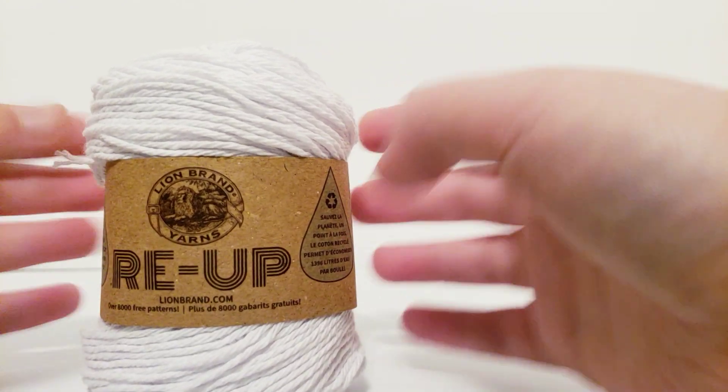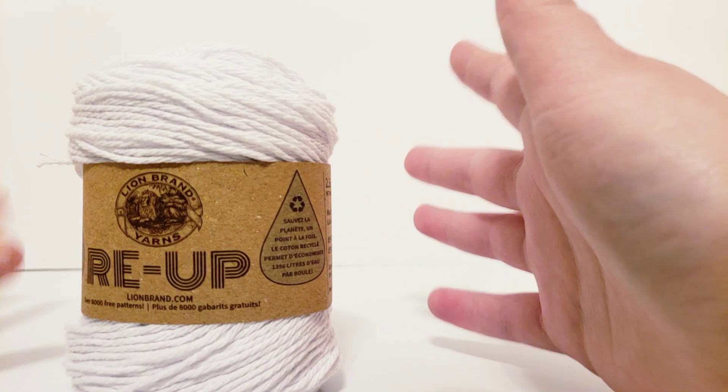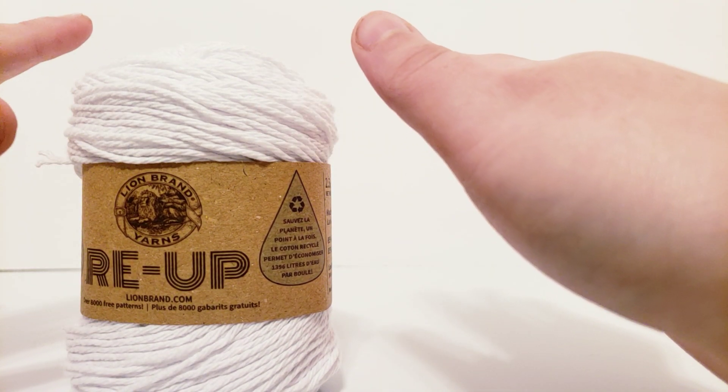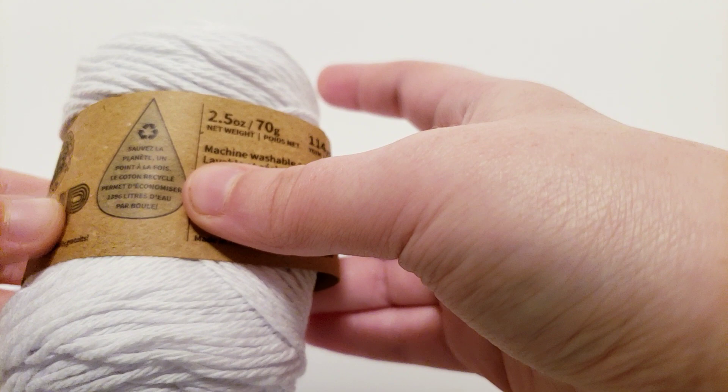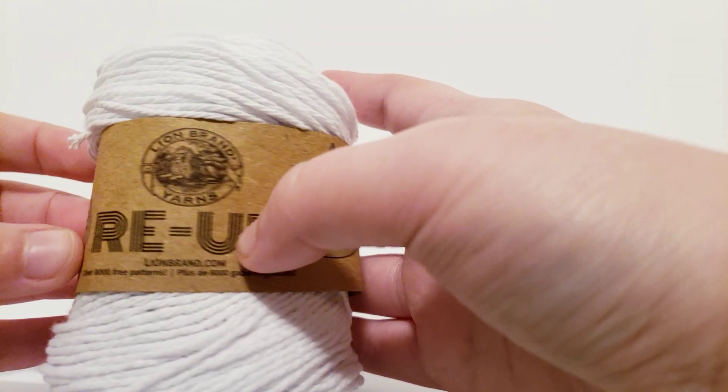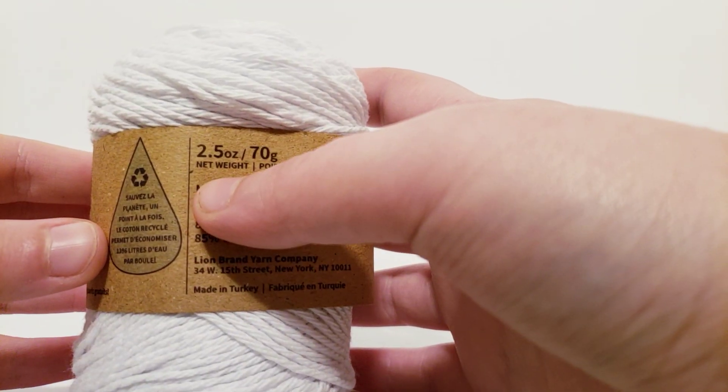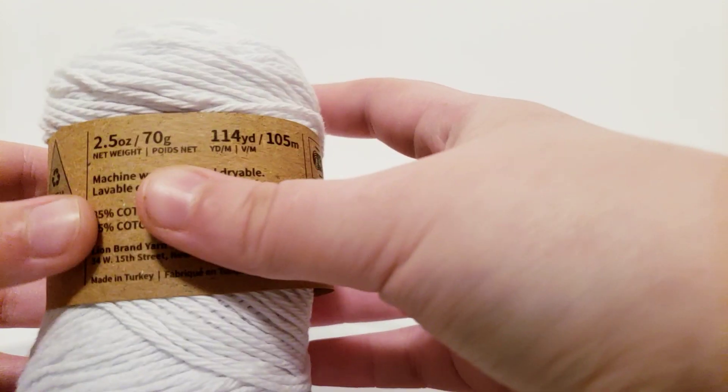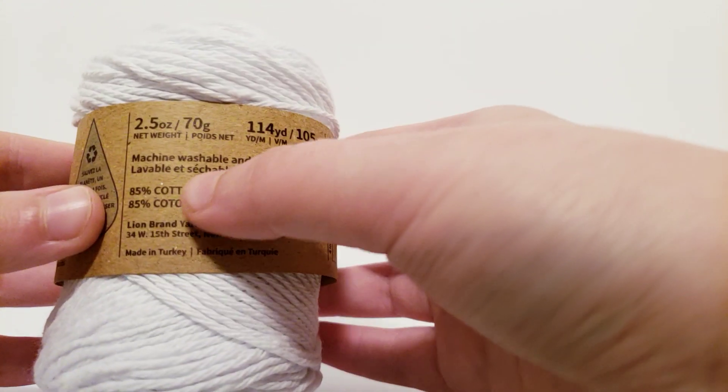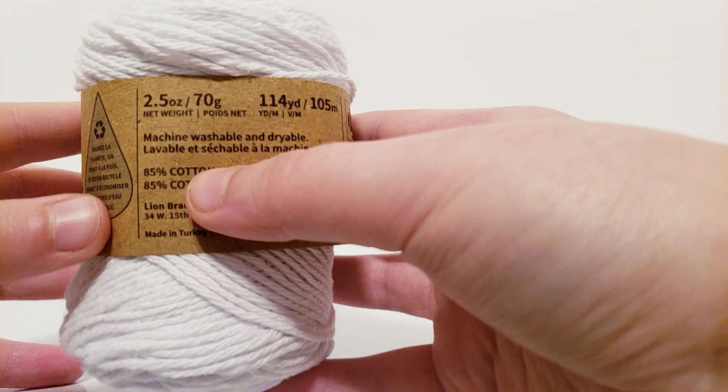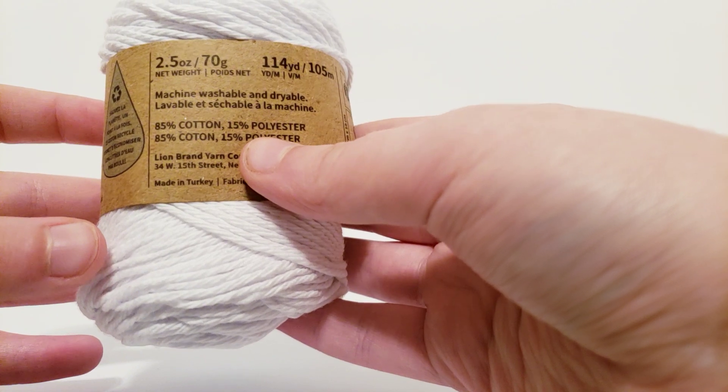They use recycled cotton for this yarn and I found this at a Michaels store in Florida because I don't have a Michaels near me. I was on vacation when I found this. It's called Lion Brand Re-Up. There is 2.5 ounces or 70 grams, 114 yards or 105 meters. It is machine washable and dryable. Now there is 85% cotton, 15% polyester.